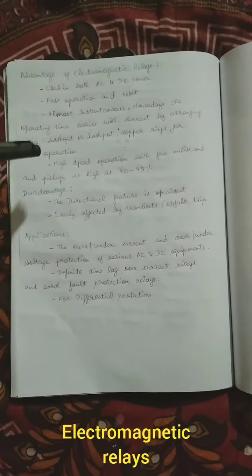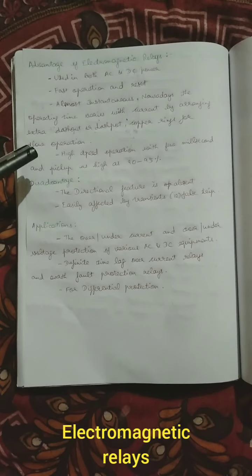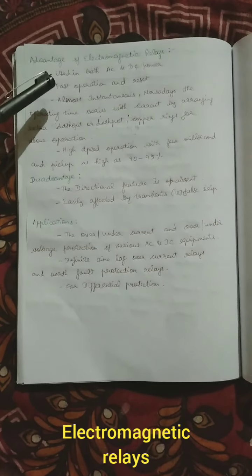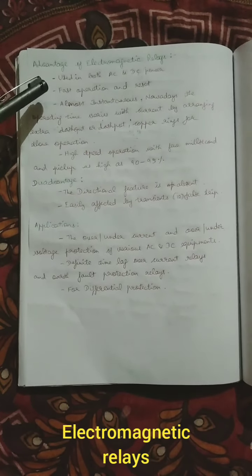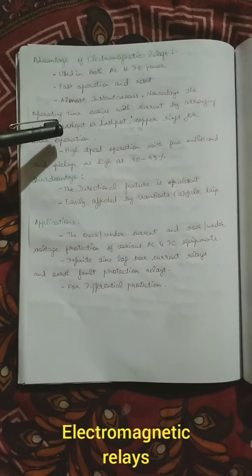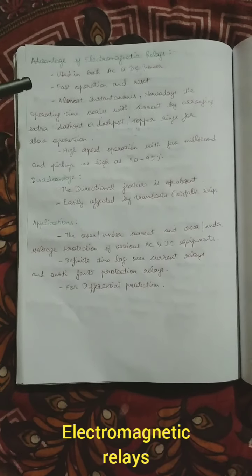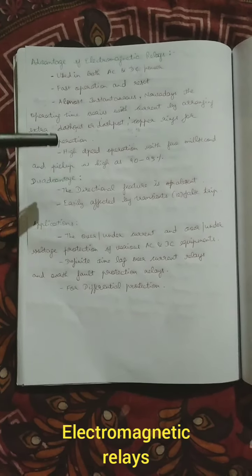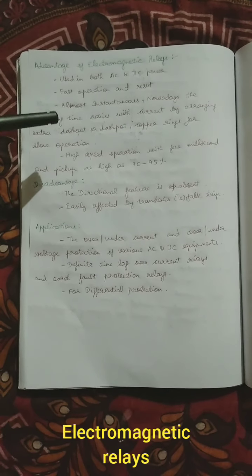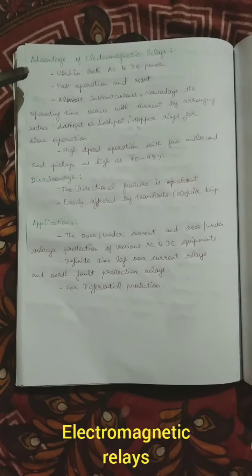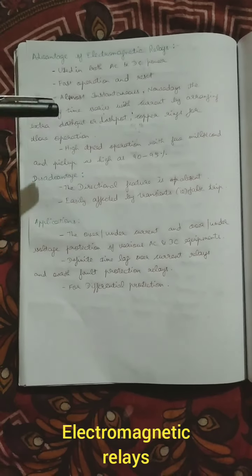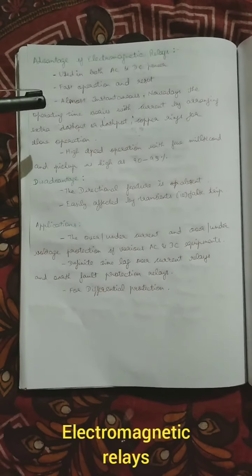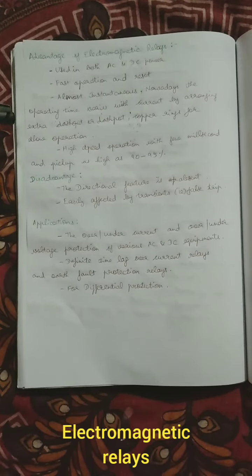Moving to the advantages and disadvantages of the electromagnetic relay. The main advantages are: it can be used for both AC and DC power; it is fast operating; it is easily reset; and it is an immediate tripping type.